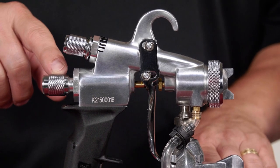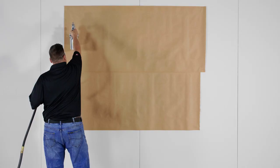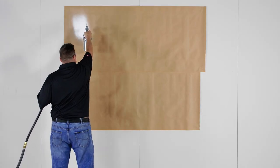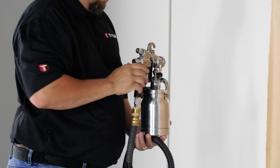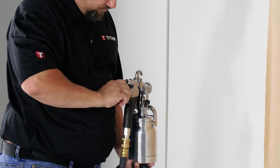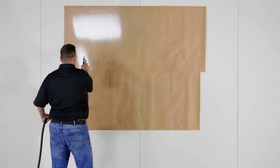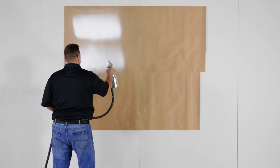Let's practice using the controls starting with the material flow knob. Remember to spray at a consistent speed and distance. Spray your first test line. Then turn the knob clockwise a couple turns and spray a second one. Notice the change in the paint thickness.